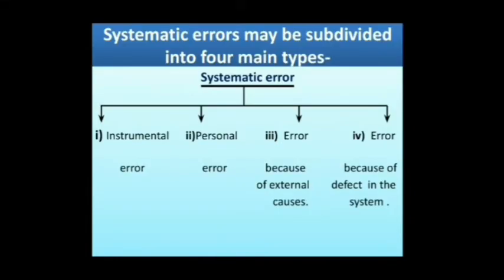Systematic errors may be subdivided into four main types: first, Instrumental error; second, Personal error; third, Error because of external causes; and fourth, Error because of defect in the system.